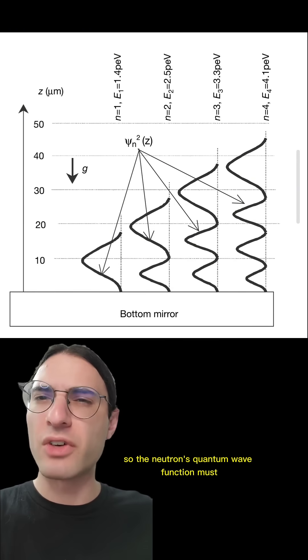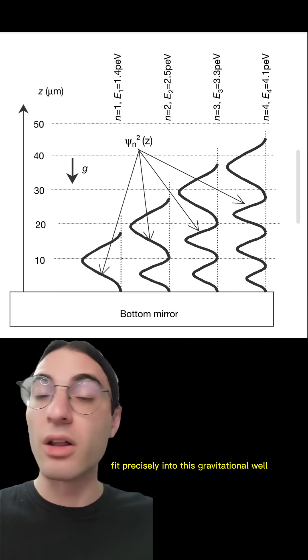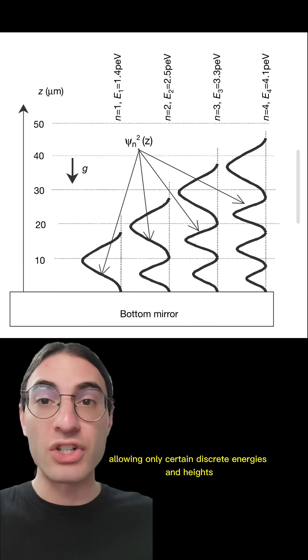So the neutron's quantum wave function must fit precisely into this gravitational well, allowing only certain discrete energies and heights.